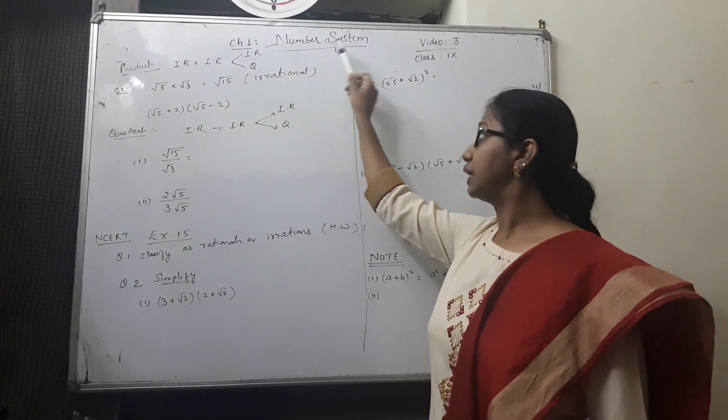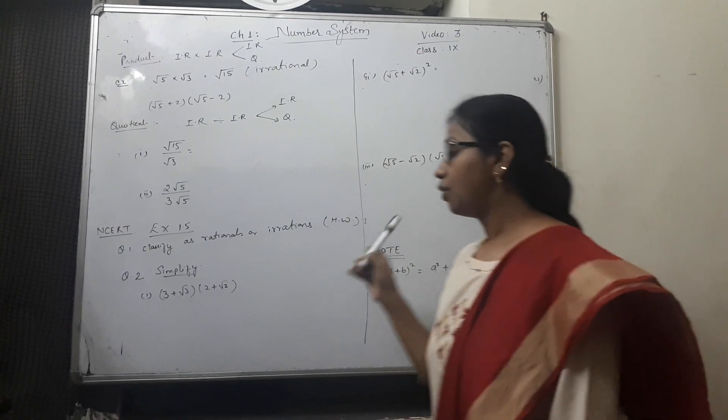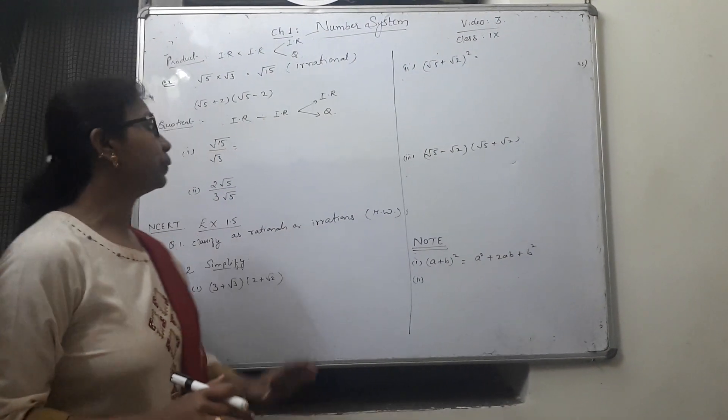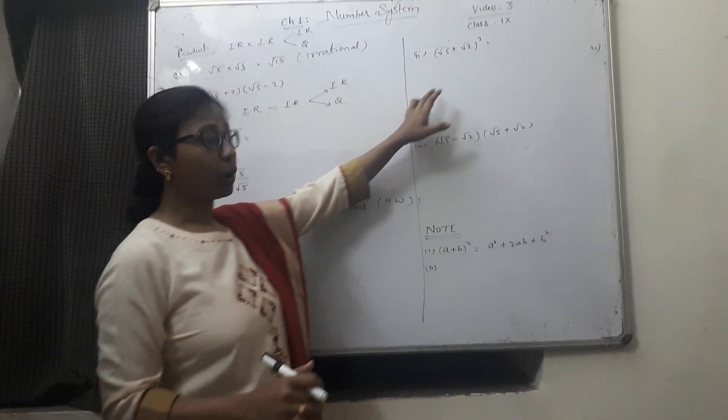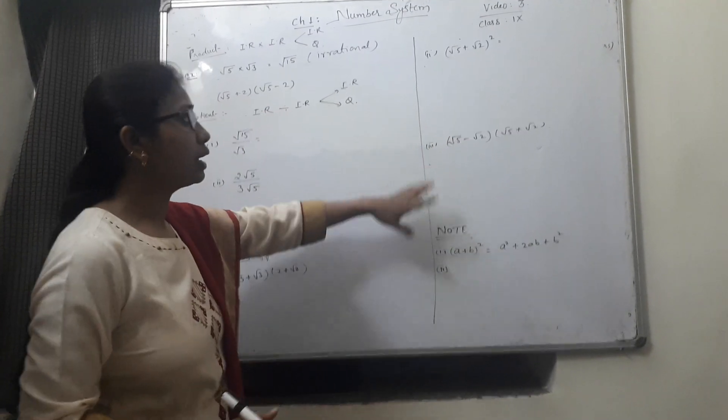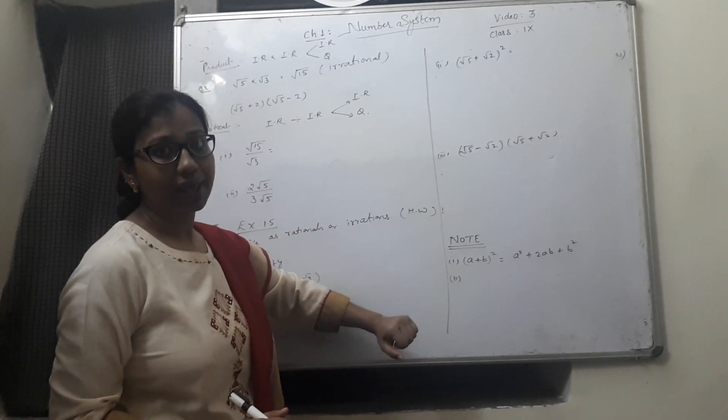We are continuing with the same chapter number system. We have discussed up to the properties of irrational numbers. Sum and difference we have already finished.